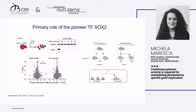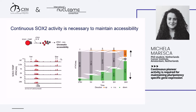We are interested in the link between accessibility and transcription. To do that, we perform ATAC-seq, a method to map chromatin accessibility genome-wide, over a time course of SOX2 depletion. Around the MYC gene, for example, the promoter is highly accessible throughout all time points, while a region just upstream of MYC loses accessibility very fast, already after 30 minutes of SOX2 loss.